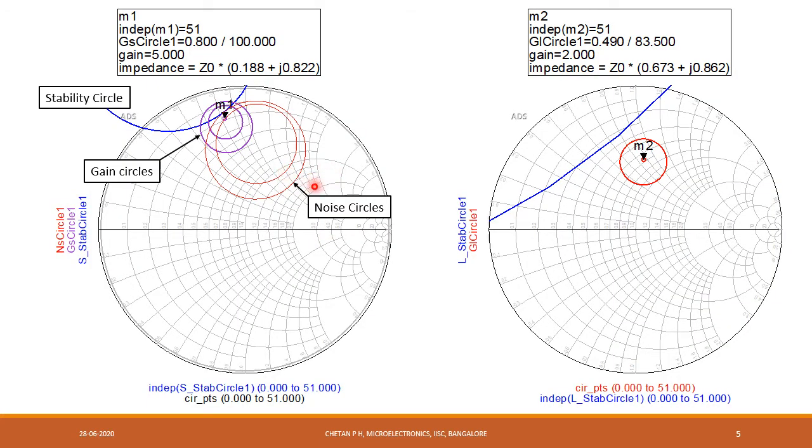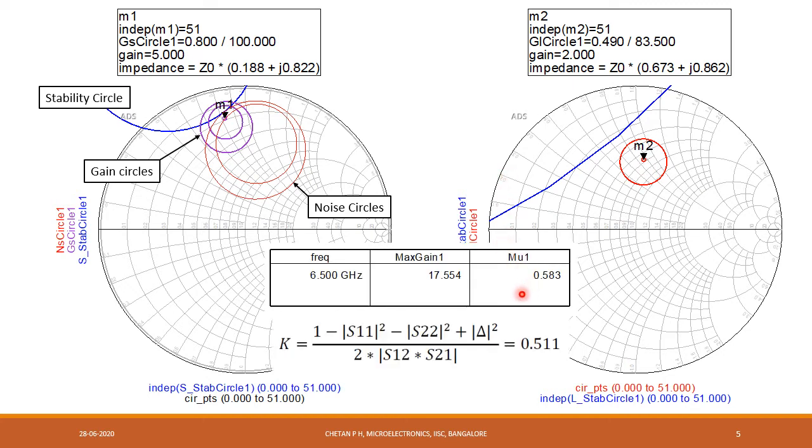After simulating, we will get noise circles and gain circles and stability circles for the source and the load. These two points that are shown are nothing but S11 conjugate and S22 conjugate. For an unilateral device, these two will be equal to the source reflection coefficient, and this will be equal to the load reflection coefficient. But as you can see here, even though these two points are outside the stability circle, the mu and the stability factor are less than 1, which means that the load reflection coefficient and the source reflection coefficient are coming inside the stability circle, which means the device is bilateral.